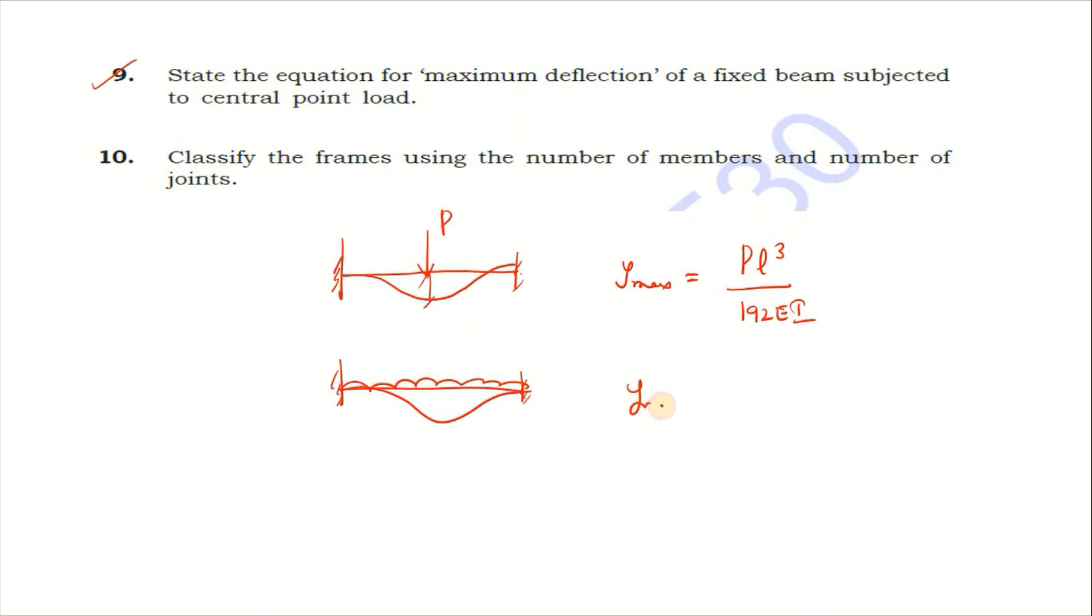For UDL it's WL⁴ by 384EI. If you compare simply supported beam and fixed beam, there's a difference in deflection formulas.